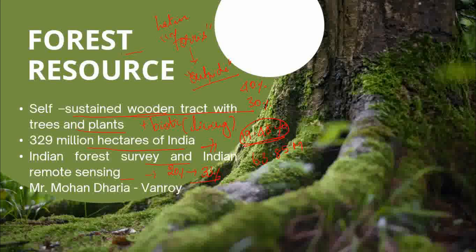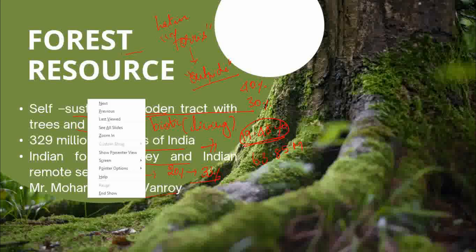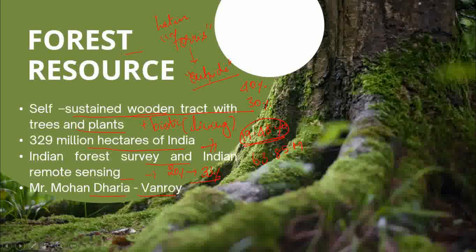The former central minister Mr. Mohan Dharia founded an organization named Vandroy, for afforestation — that is, planting tree saplings. He founded this organization in Pune. I am mentioning only the main points; you can add extra points. This can be asked in a 10-mark question.